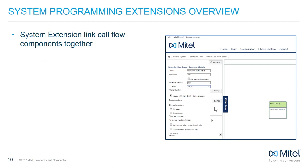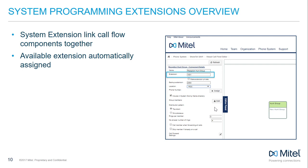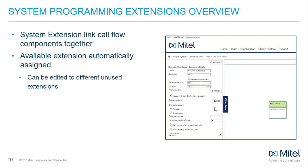Paging Groups, Pickup Groups, Hunt Groups, Emergency Hunt Groups, and Auto Attendance all require system programming extensions to be assigned to the Callflow Component. These extensions allow for components to be reached in the system either by dialing internally or by being linked from another Callflow Component. The next available system extension is automatically assigned to these components and can be edited to any other unused extension, so long as it's valid and doesn't conflict with the dial plan.